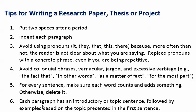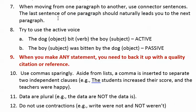Number six: each paragraph has an introductory or topic sentence, followed by examples based on that topic sentence. Typically in a research paper, you might say 'the research suggests that...' and then follow up with three or four studies, a sentence per study, representing that first theme. Number seven: when moving from one paragraph to another, use connector sentences. The last sentence of one paragraph should naturally lead to the next, creating a natural flow.